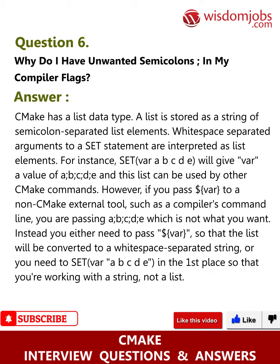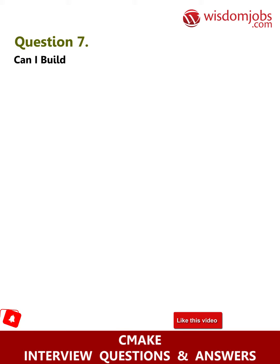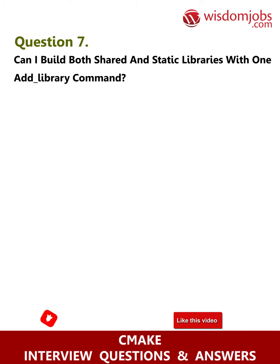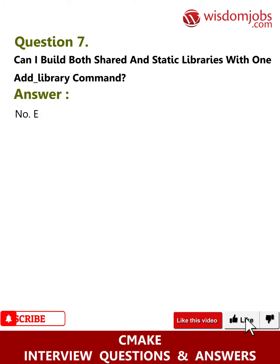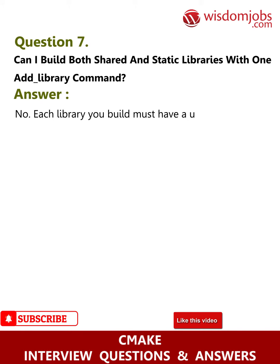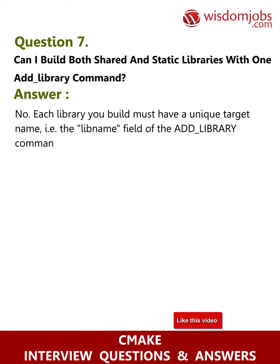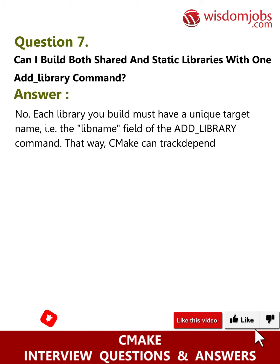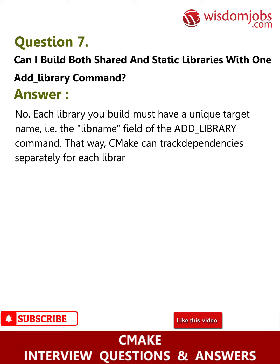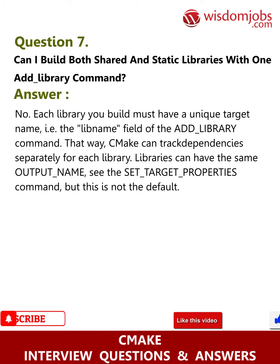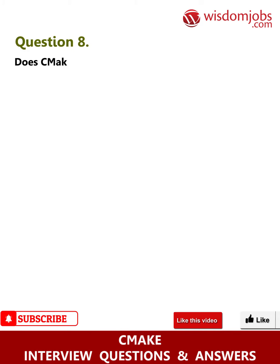Question 7: Can I build both shared and static libraries with one add_library() command? Answer: No. Each library you build must have a unique target name, i.e., the lib-name field of the add_library() command. That way CMake can track dependencies separately for each library. Libraries can have the same OUTPUT_NAME — see the set_target_properties() command — but this is not the default.